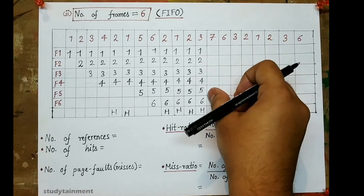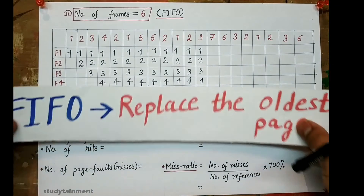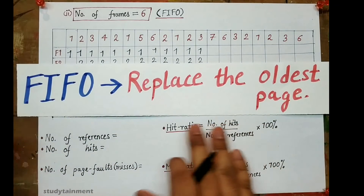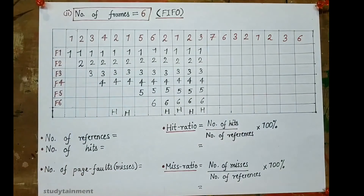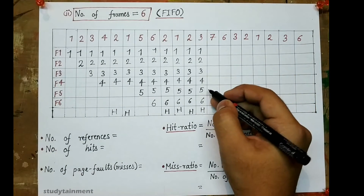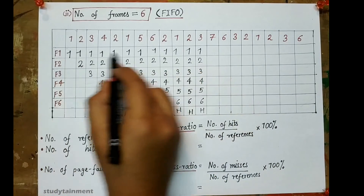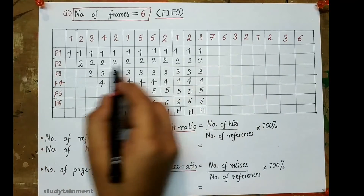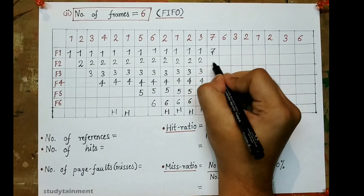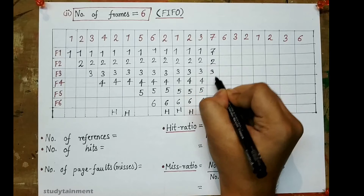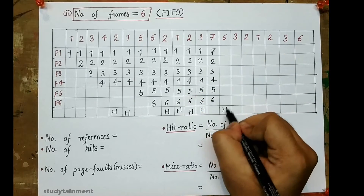Now 7 comes — 7 is not present, so a page needs to be replaced. According to FIFO we replace the oldest page. Among 1, 2, 3, 4, 5, and 6, page 1 is the oldest — it has been there the longest, then 2, then 3. So 1 will be replaced with 7. Then 6 comes — 6 is present, so this is a hit.